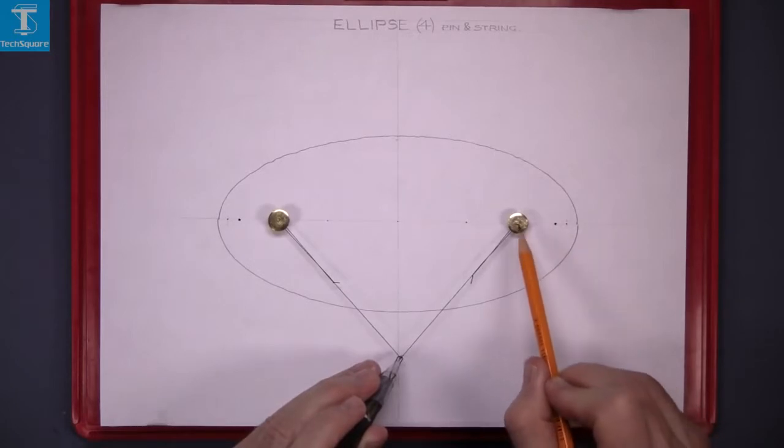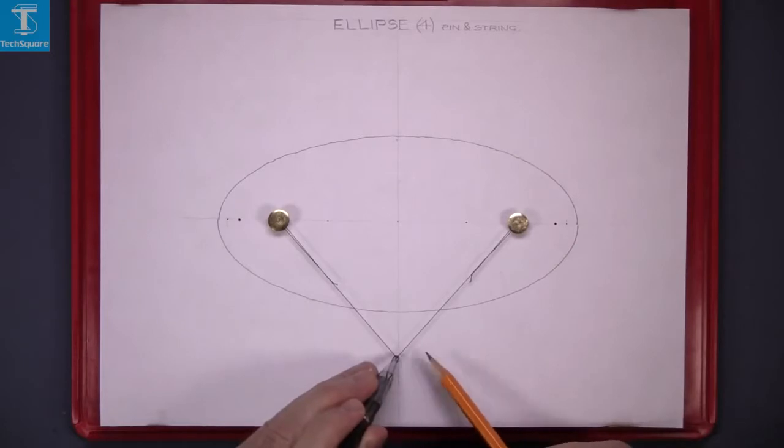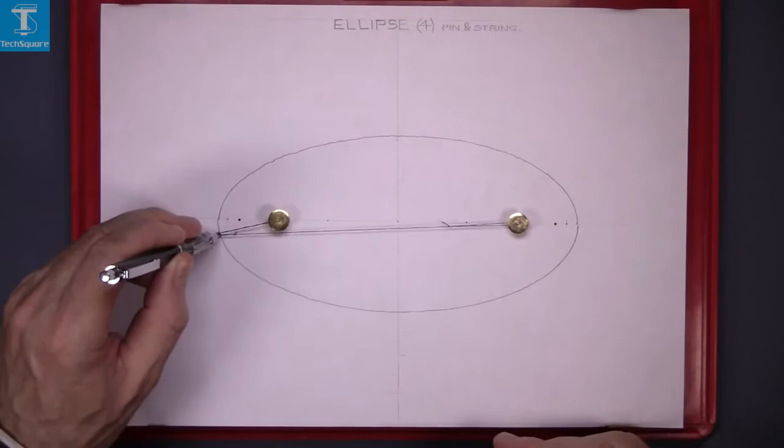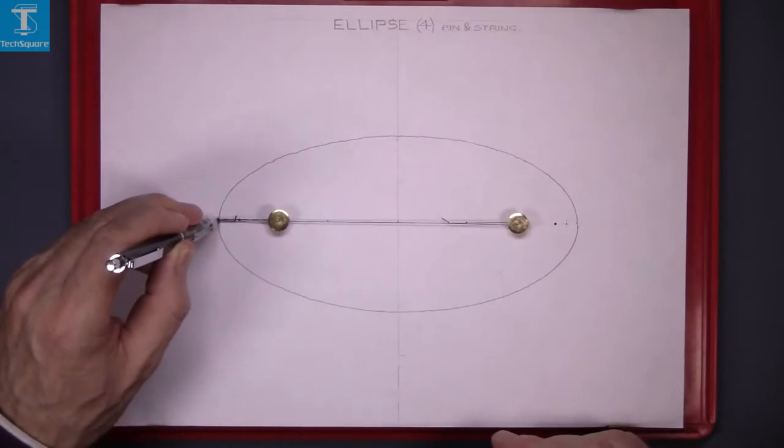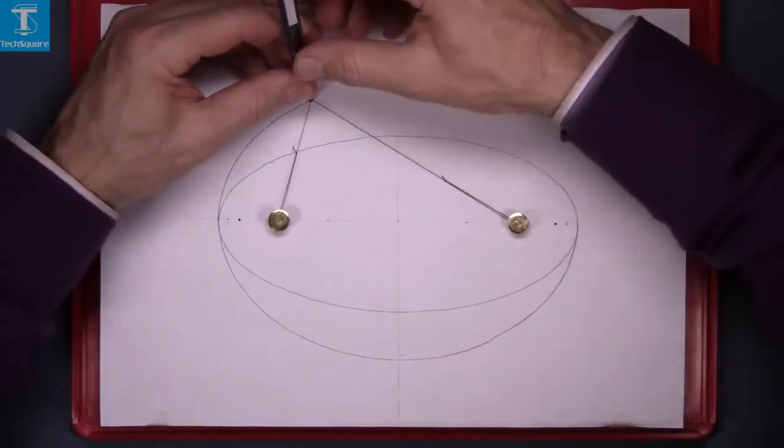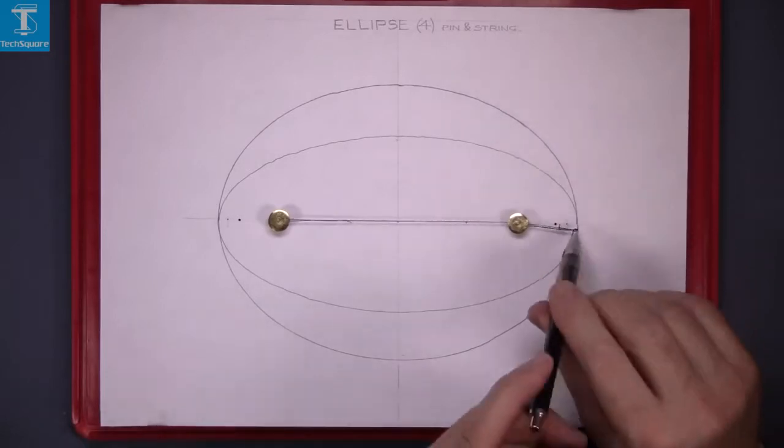I have moved the pins in now about 10mm. Now the string comes out farther, so the ellipse is going to be wider—same length but wider. That is one half of it and the top half, and that is another ellipse done.